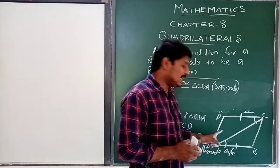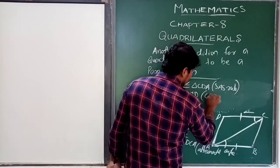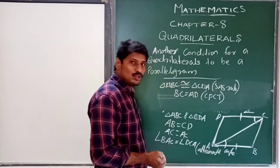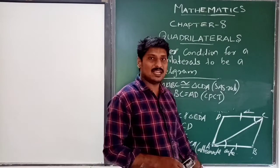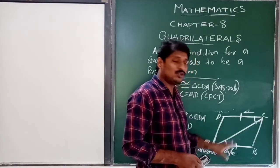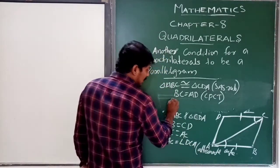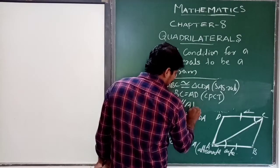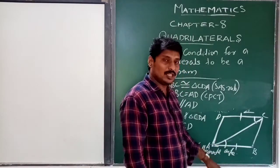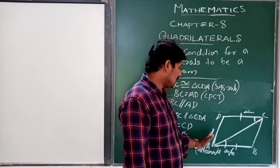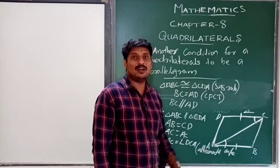By CPCT — Corresponding Parts of Congruent Triangles — BC is equal to AD, and AB is parallel to CD. Therefore ABCD is a parallelogram, as both pairs of opposite sides are shown to be equal and parallel.